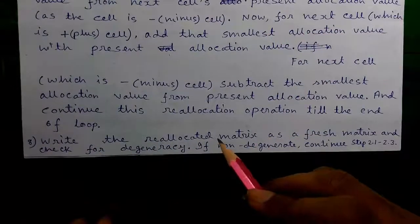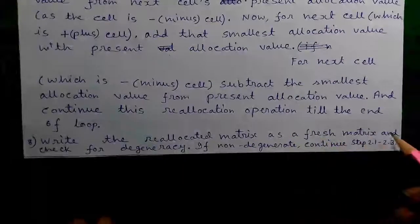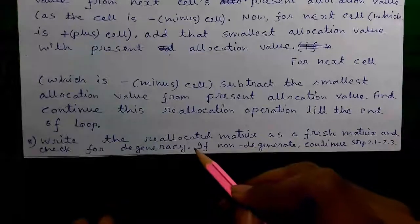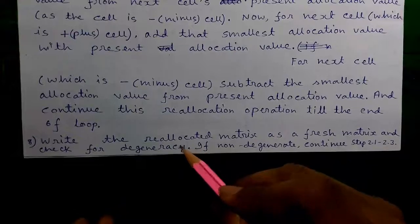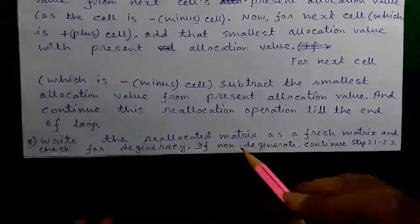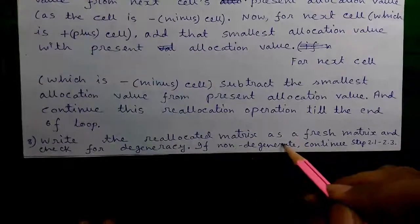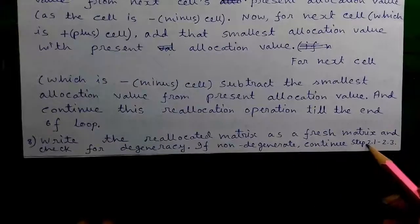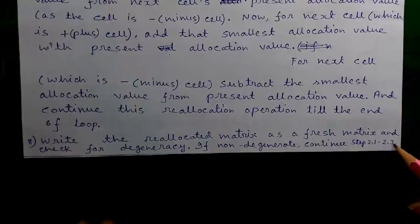Write the reallocation matrix as a fresh matrix and check for degeneracy again. The concept of degeneracy I explained in the first part of the video. If the reallocation matrix is not non-degenerate, then continue the steps 2.1 to 2.3.